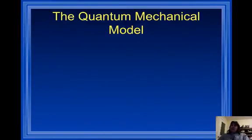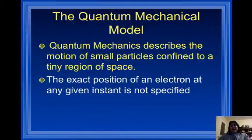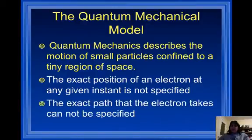So we have a new model of the atom called the quantum mechanical model. Quantum mechanics describes the motion of small particles confined to a tiny region of space. The exact position of an electron at any given instant is not specified, and the exact path that the electron takes cannot be specified. Now, here's the thing. In Bohr's model, we had a two-dimensional region of space where the electron could be located.